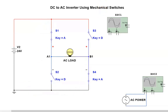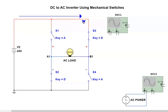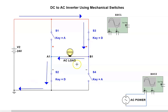Now we're going to open S1 and S4 and close S2 and S3, and trace out the current flow. Current flows from the source to S3, through the load in the opposite direction, then through S2 and back to the source. So in one direction it flows from left to right, and in the other direction it flows from right to left.